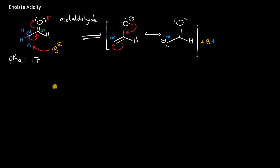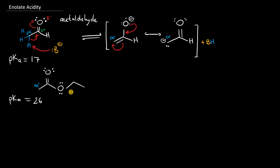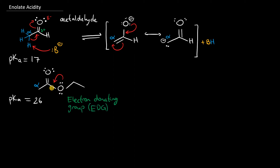One example is ethyl acetate. We can draw in all the lone pairs and analyze how this compound is actually less acidic than acetaldehyde — the pKa of ethyl acetate is roughly 26. We know that the carbonyl as a functional group is electron withdrawing because of the electronegative oxygen. But the ethoxy group, rather than withdrawing electrons, bears two lone pairs on oxygen and can actually donate electron density by resonance. So we classify the ethoxy group as an electron donating group, which reduces the acidity and drives up the pKa.